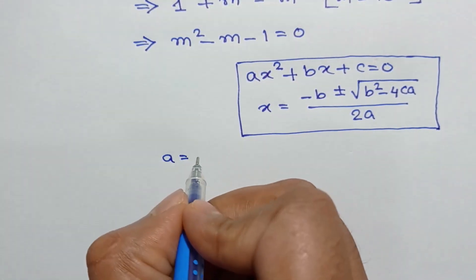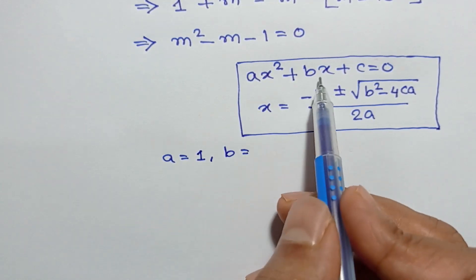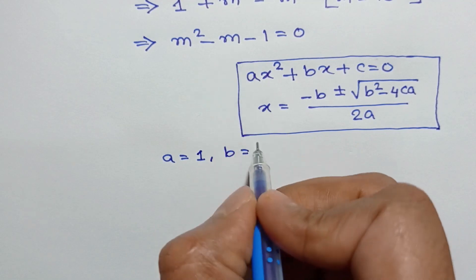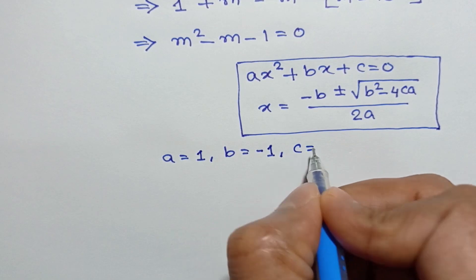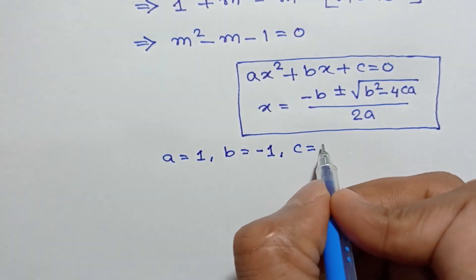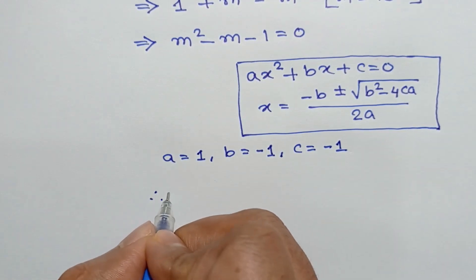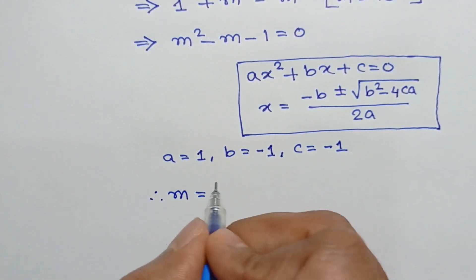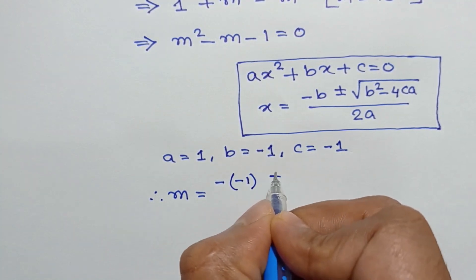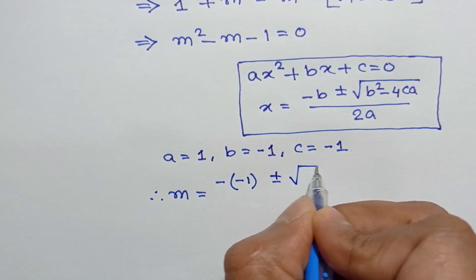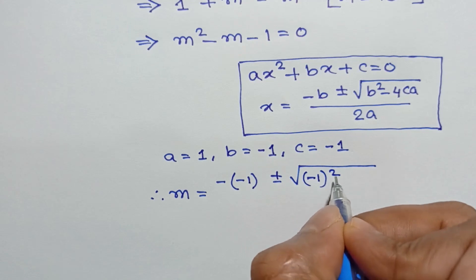Now applying this formula to our equation, a is equal to the coefficient of m squared, which is 1, and b is equal to the coefficient of m, which is negative 1, and c is equal to the constant term, which is negative 1.